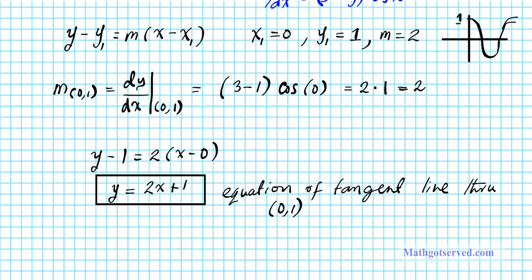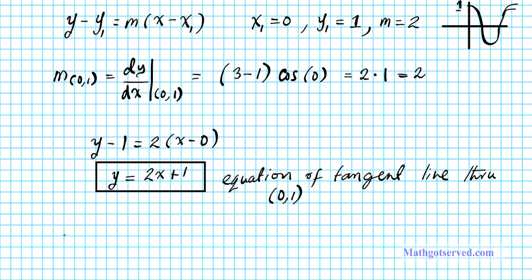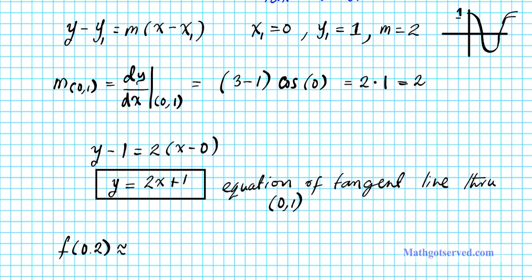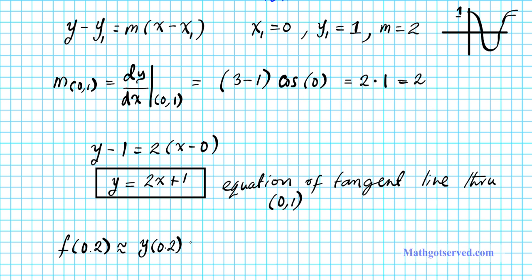Now let's do the second part of part B: the linear approximation. f(0.2) can be approximated by evaluating the tangent line equation at x = 0.2. So that's approximately y evaluated at 0.2, which gives us 2 times 0.2 plus 1. Multiplying out: 0.4 plus 1 equals 1.4.